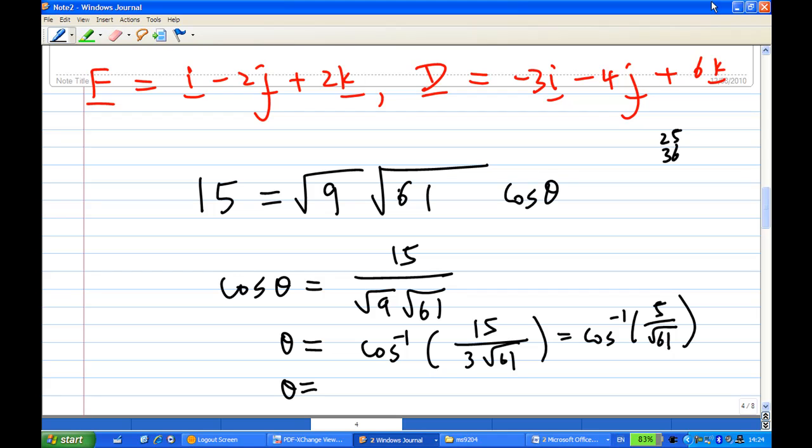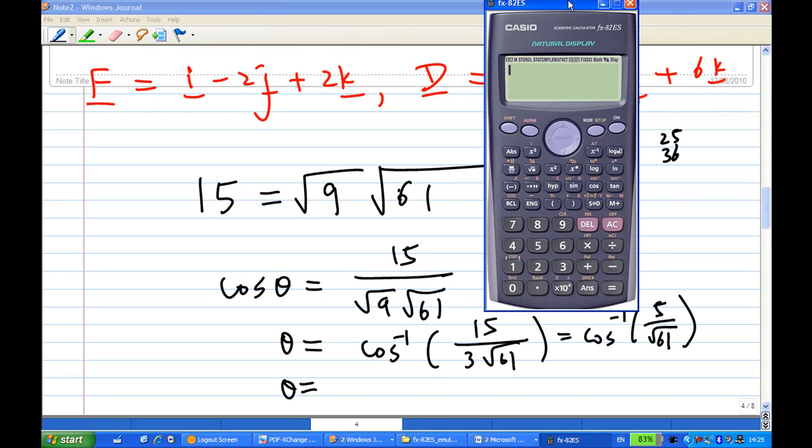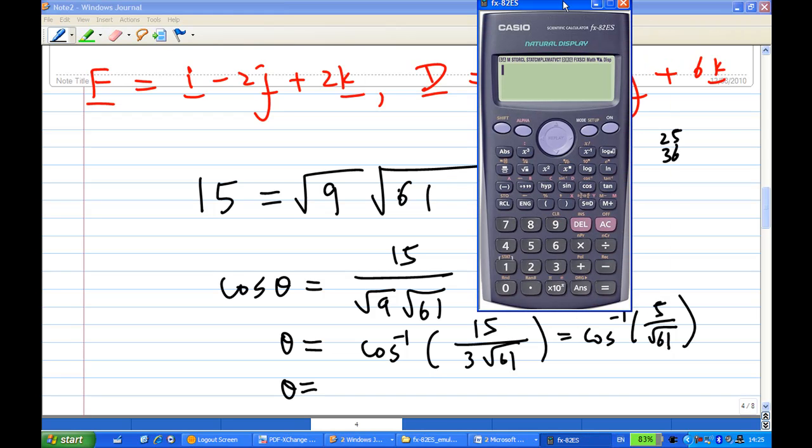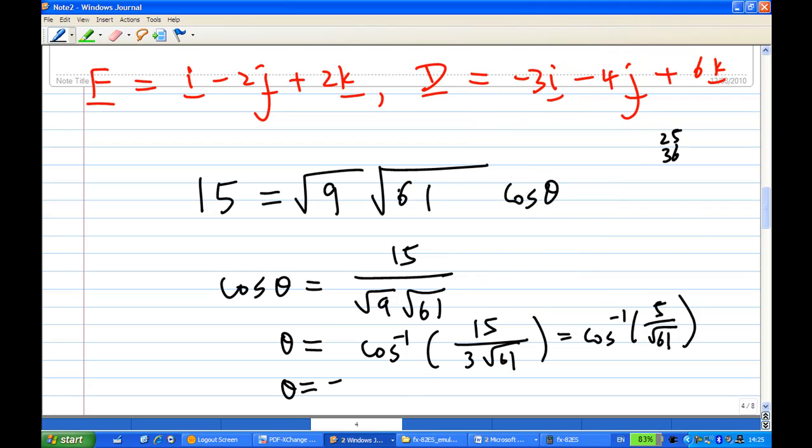Let me call my calculator. Cosine inverse 5 over square root of 61. I press shift cosine inverse 5 over square root of 61, this will give me 50.19 degrees. That is the angle between F and D.